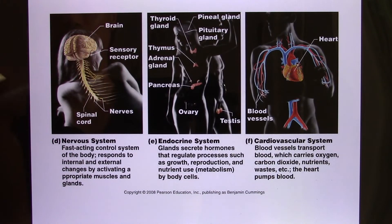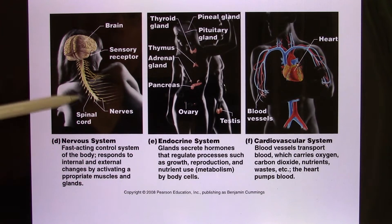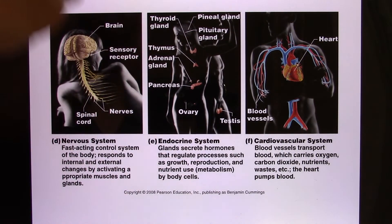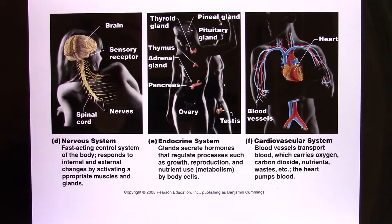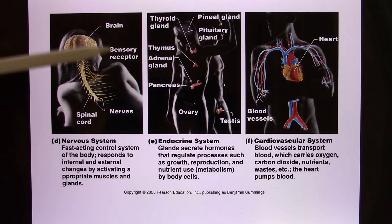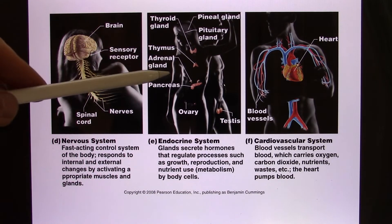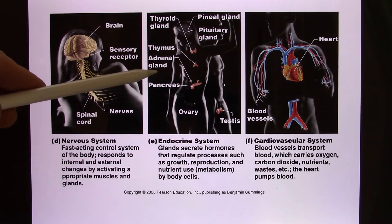The nervous system is a big topic in Unit 4. It's your long-distance communication system — your head can control your finger through the nervous system. The endocrine system, covered in AP2, is the other long-distance communication system. It produces chemical signals called hormones that travel through your blood.